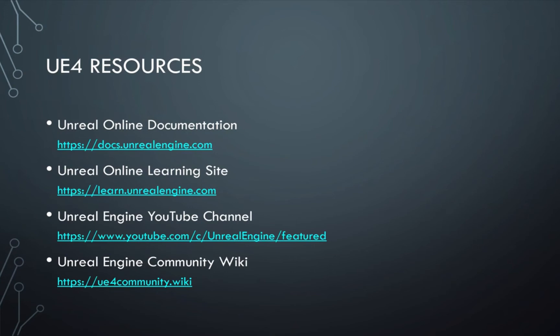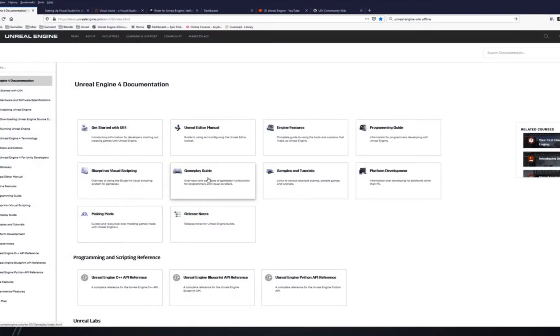One resource is the community wiki. There was an official Unreal Engine wiki, but they closed it down. However there's a community-based wiki for Unreal Engine which has all the legacy content from the old wiki plus new stuff. I'll put all these links in the description down below, so let me show you them.